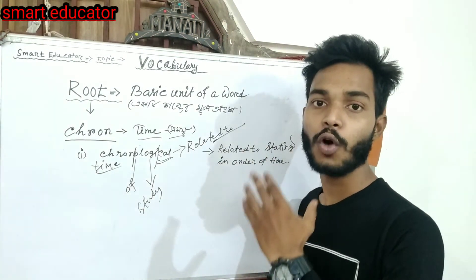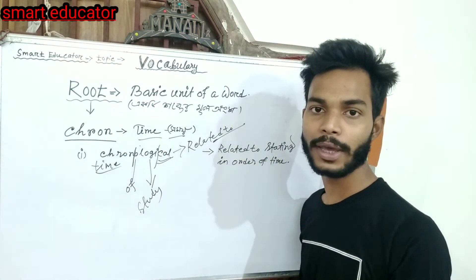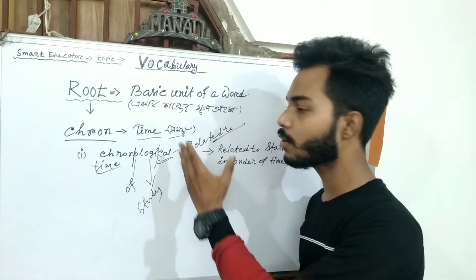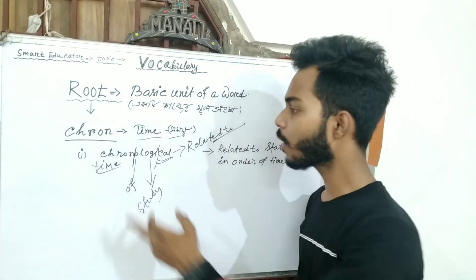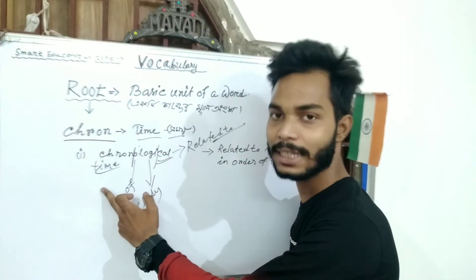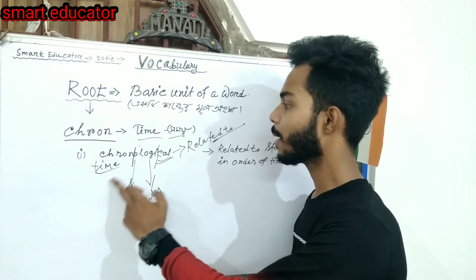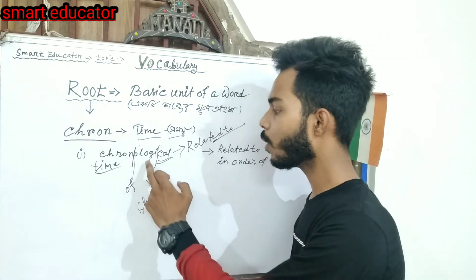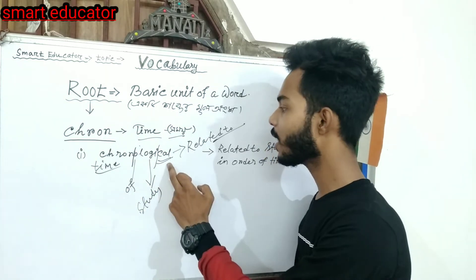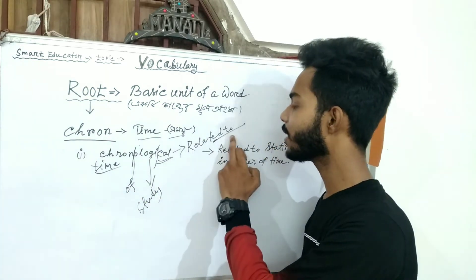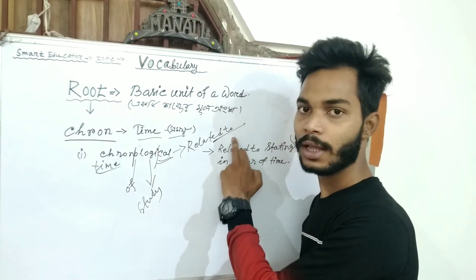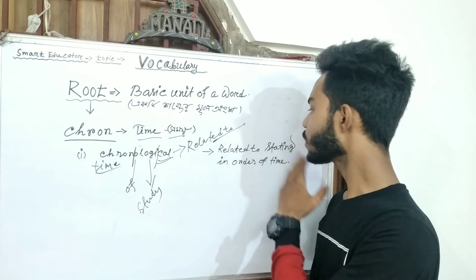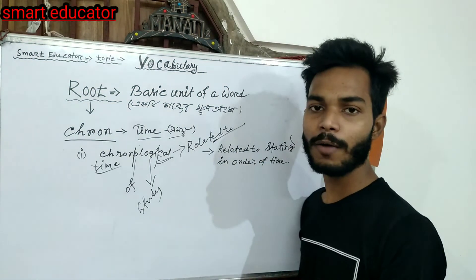A general term means state. So chronological means: chron = time, o = of, logi = study, and cal = related to. So chronological means related to stating things in order of time.